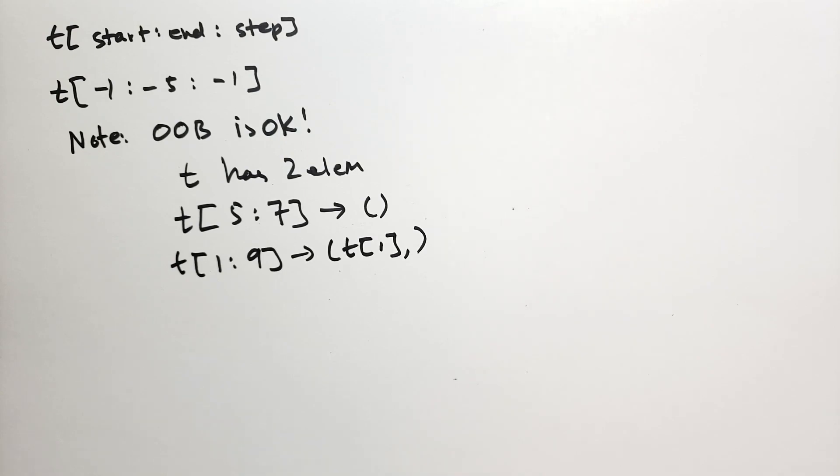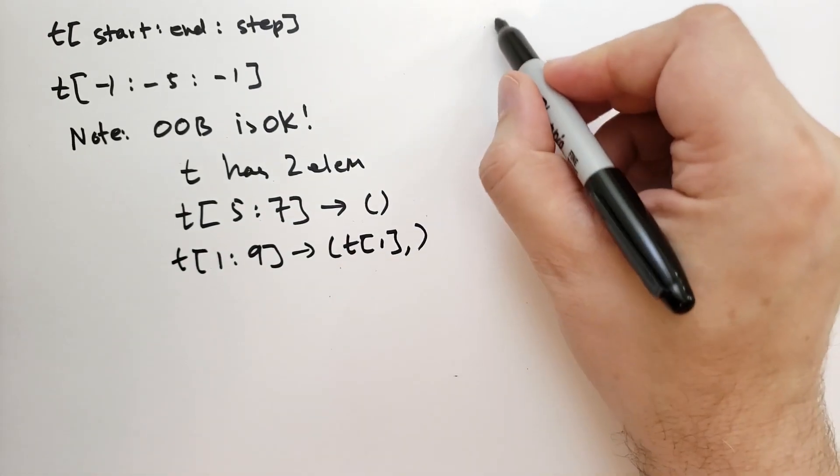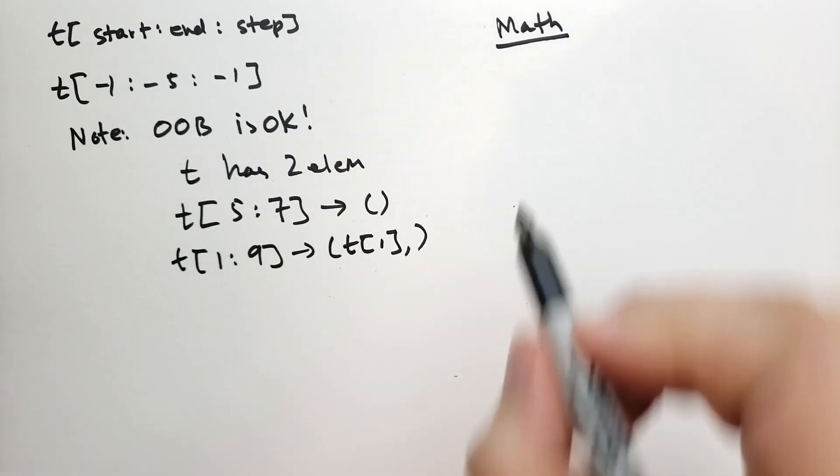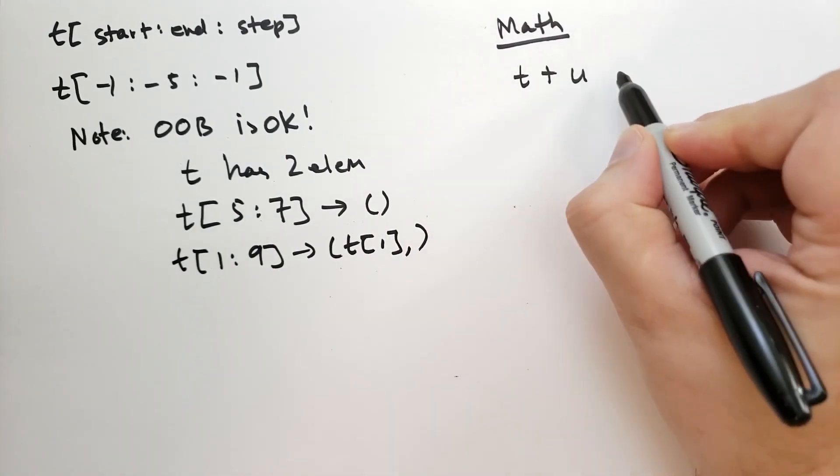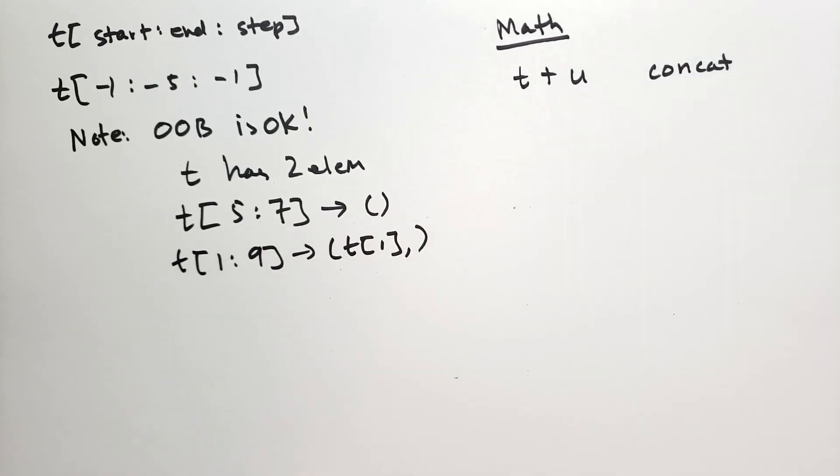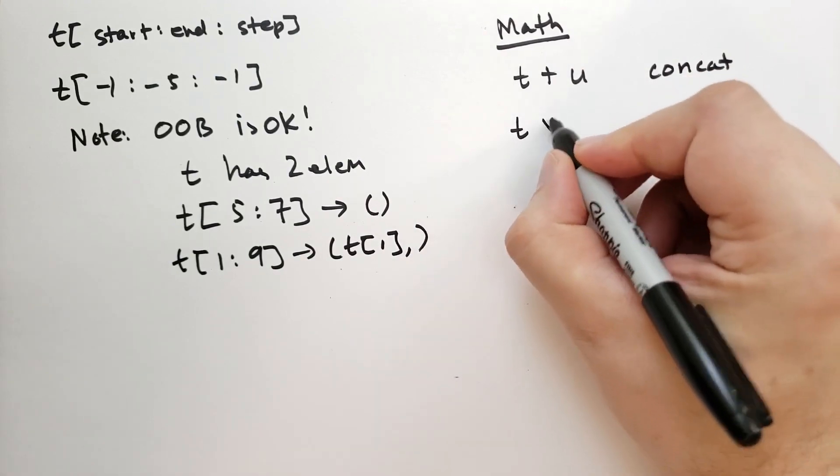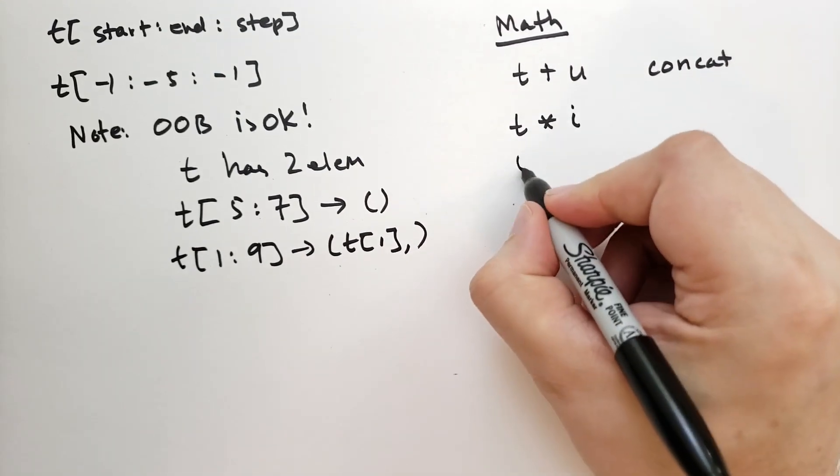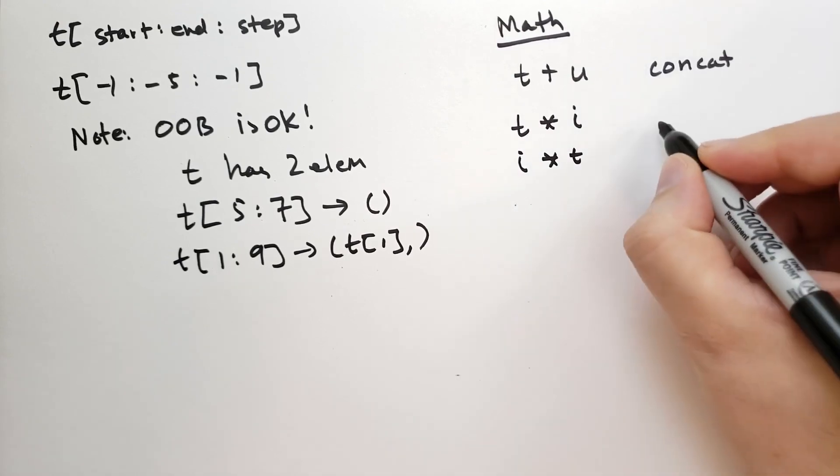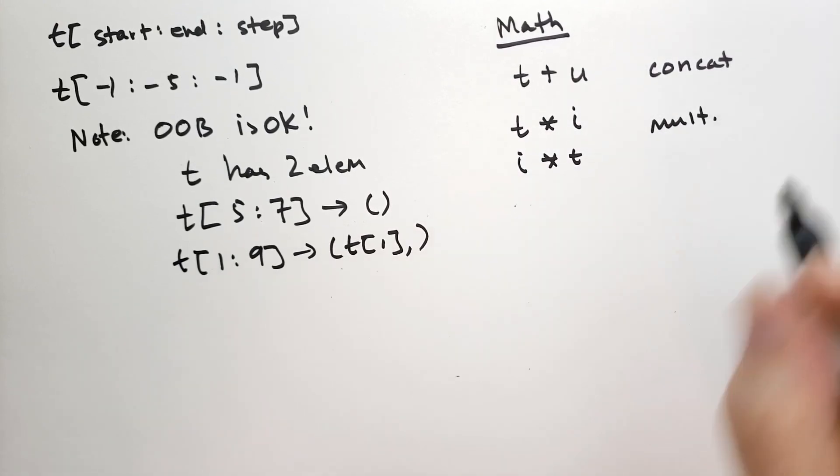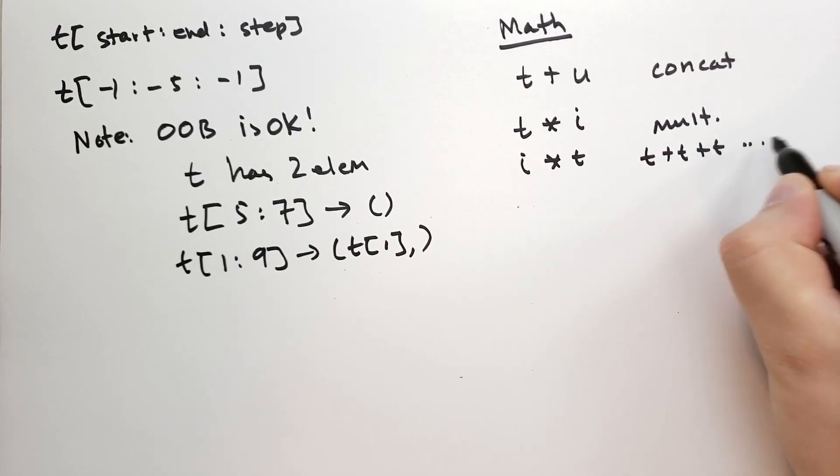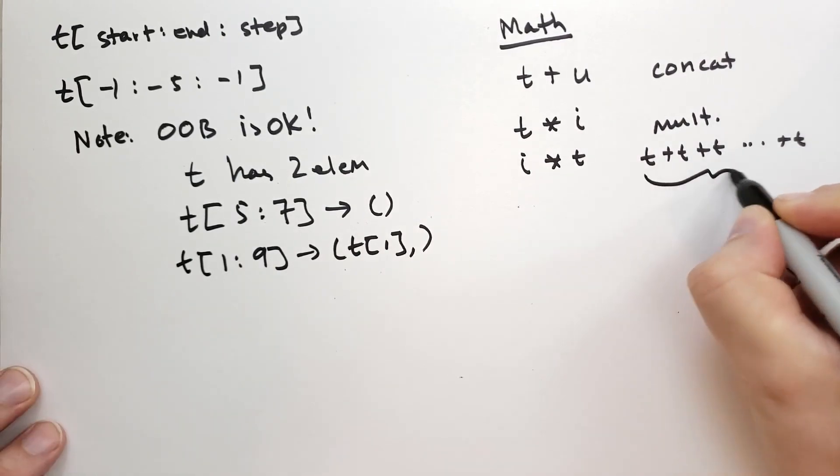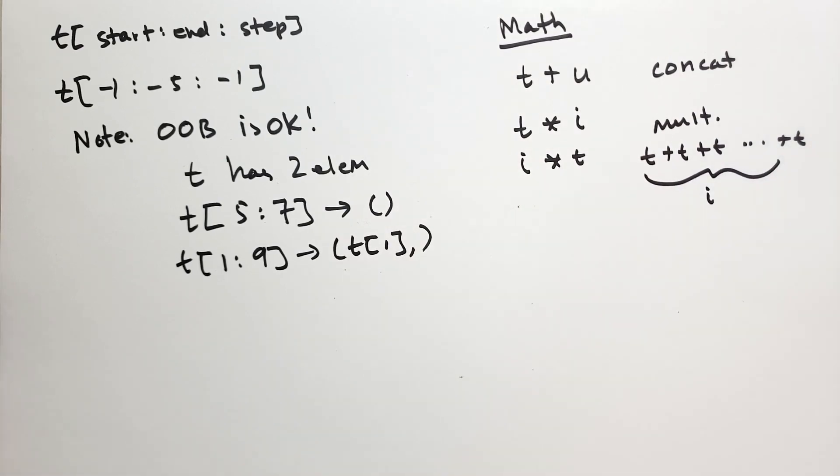Let's talk a little bit about tuple math. So we can do some math with tuples. There's two operations that are interesting. One is when you have a tuple plus another tuple. This is going to do concatenation, just like it does with strings. And we can also take a tuple and we can multiply it by some integer i. And either direction is okay. And this does the multiplication, just like we saw with strings. So it's basically going to take t plus t plus t plus t, i times.